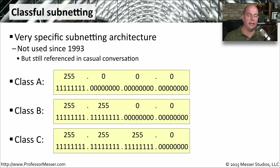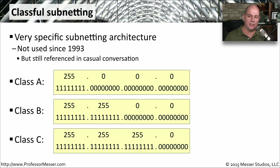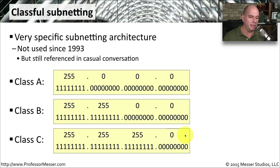There was a time with IP addressing where we didn't really require you to know a subnet mask. The subnet mask was set automatically based on what your IP address was — we call that classful subnetting. Every IP address range had a subnet mask that was automatically associated with it, and there was really no changing this. That was a very static structure that didn't allow us to configure different sizes of networks, so we moved away from classful subnetting in 1993. We still reference it casually in conversation. For example, if somebody says 'that's a class C,' you'll know they're referring to a 255.255.255.0 subnet mask.